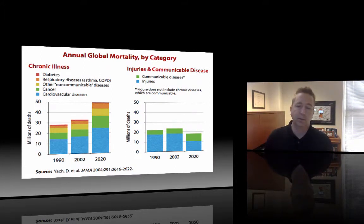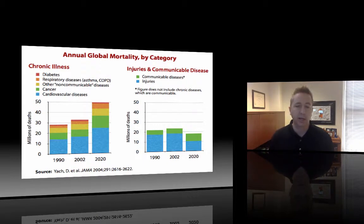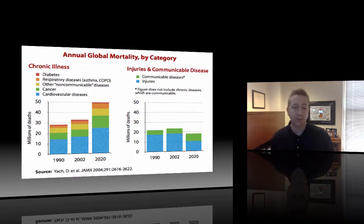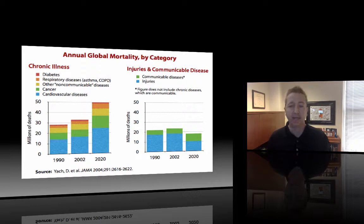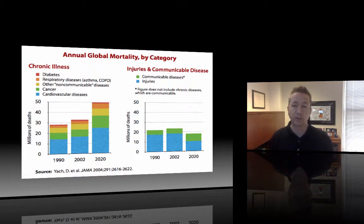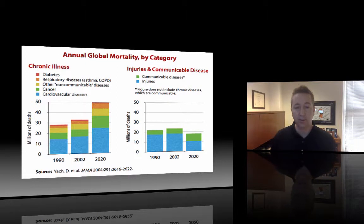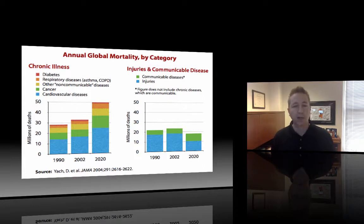Looking at the prevalence of chronic conditions across the globe, we see that over time chronic conditions are growing in prevalence. From 1990 projected out to 2020, there is an almost doubling of people living with chronic conditions. This is partly due to the success we have had against infectious communicable diseases and injuries. There is a significant decline in deaths due to injuries or communicable diseases from 1990 projected through 2020, with automobile safety being a big part of that.